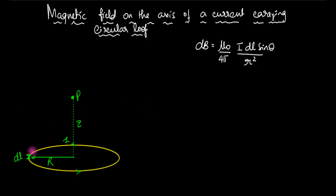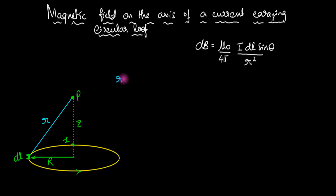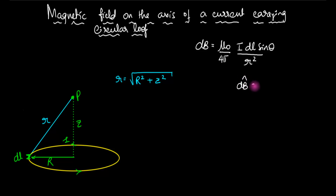I need to draw a vector from here to there. Here is a line from here to here, and let's call that line as small r. We know what small r is — from the right-angled triangle, small r is just Pythagoras: it's capital R squared plus z squared. And what's going to be the direction of the magnetic field? Well, we need to do dl cross r. The direction of the magnetic field is in the same direction as dl cross r.